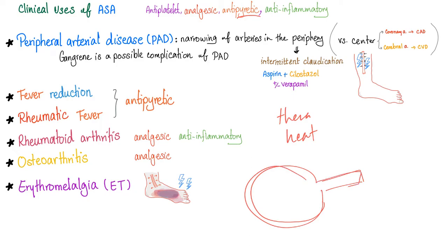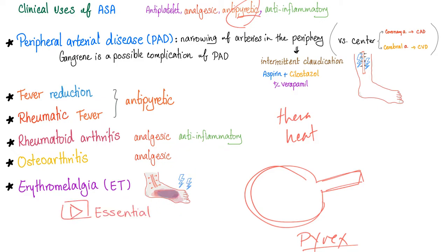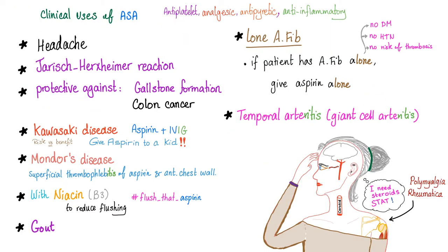Aspirin is antipyretic — pyretic means fever, hence pyrex glass that withstands heat. Clinical uses: rheumatic fever because aspirin is antipyretic; rheumatoid arthritis because aspirin is analgesic and anti-inflammatory; osteoarthritis because aspirin is analgesic — though there is no significant inflammation in osteoarthritis, it's a mechanical arthritis. Erythromelalgia, which I've discussed in my video about essential thrombocytosis, is another indication. Headache — yes, aspirin is analgesic.